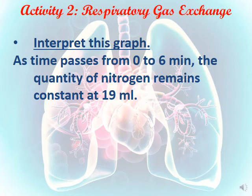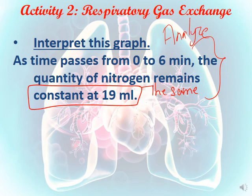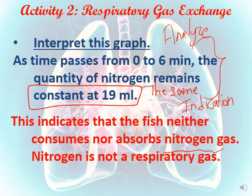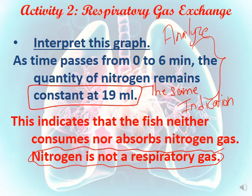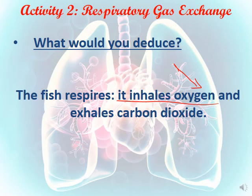As time passes from zero to six minutes, the quantity of nitrogen remains constant at 19 milliliters — this is the analysis. For interpretation, the indication is: this indicates that the fish neither consumes nor absorbs nitrogen, so nitrogen is not considered a respiratory gas since it is not consumed or released. In summary, the fish inhales and consumes oxygen since its amount is decreasing, and it exhales and releases carbon dioxide since its amount is increasing.